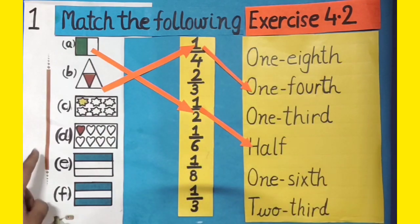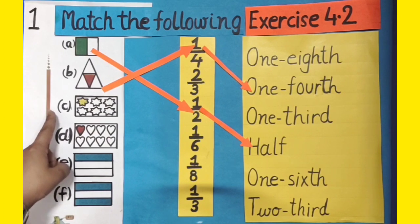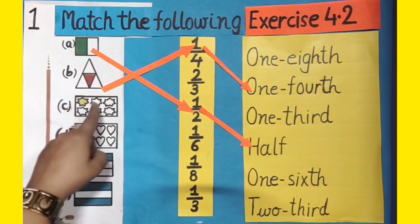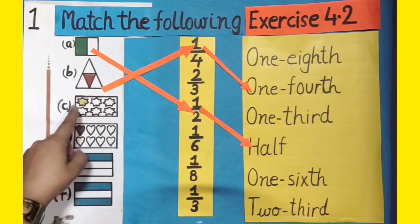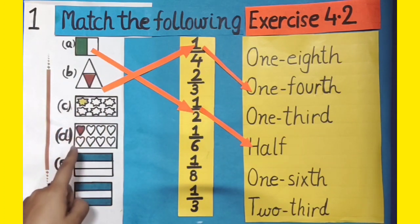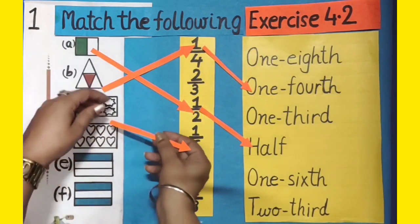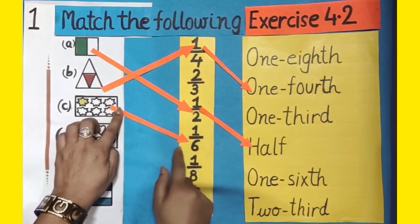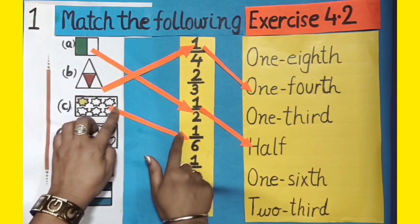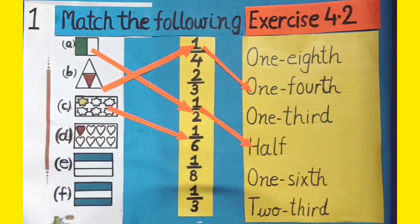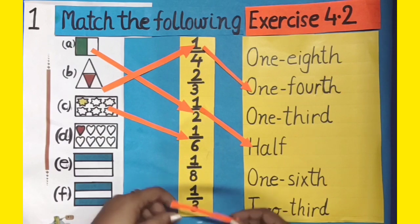Now, in part C, out of 6 equal parts, one is colourful. So its fraction form will be 1 by 6, and in words it can be written as 1 sixth.